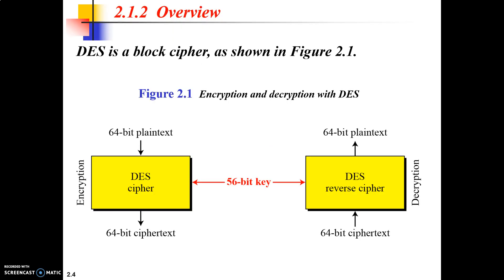The working of the DES block cipher is shown on your screen. On the left hand side, we have the 64-bit plain text which is sent as an input to our DES cipher, and along with the plain text we are also going to send a 56-bit key. For encryption, you will take the 64-bit plain text and the 56-bit key, and the result is going to be a 64-bit cipher text. This cipher text is transmitted to the receiver. On the receiver side, the same 56-bit key is used for decryption, and the result is your original 64-bit plain text.